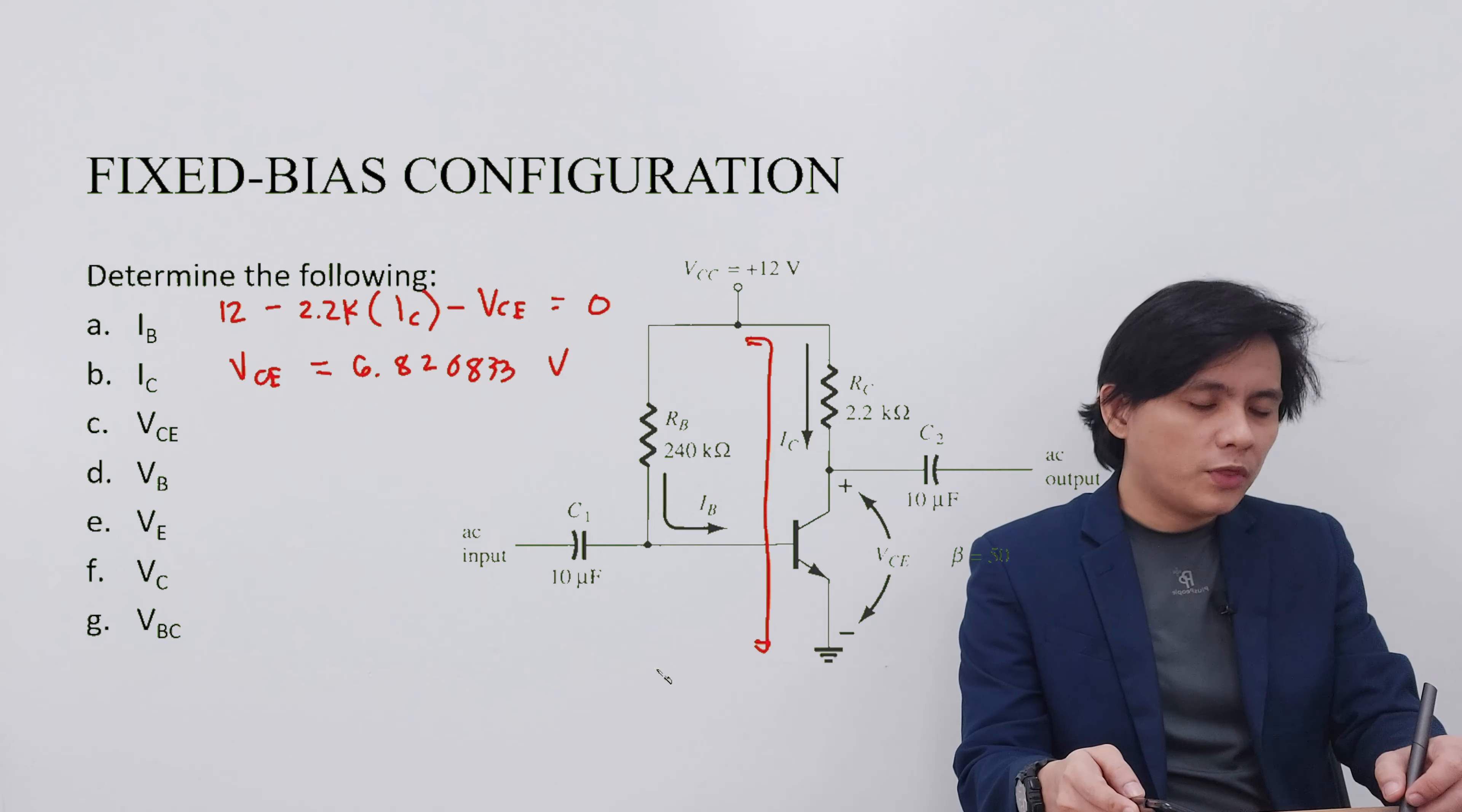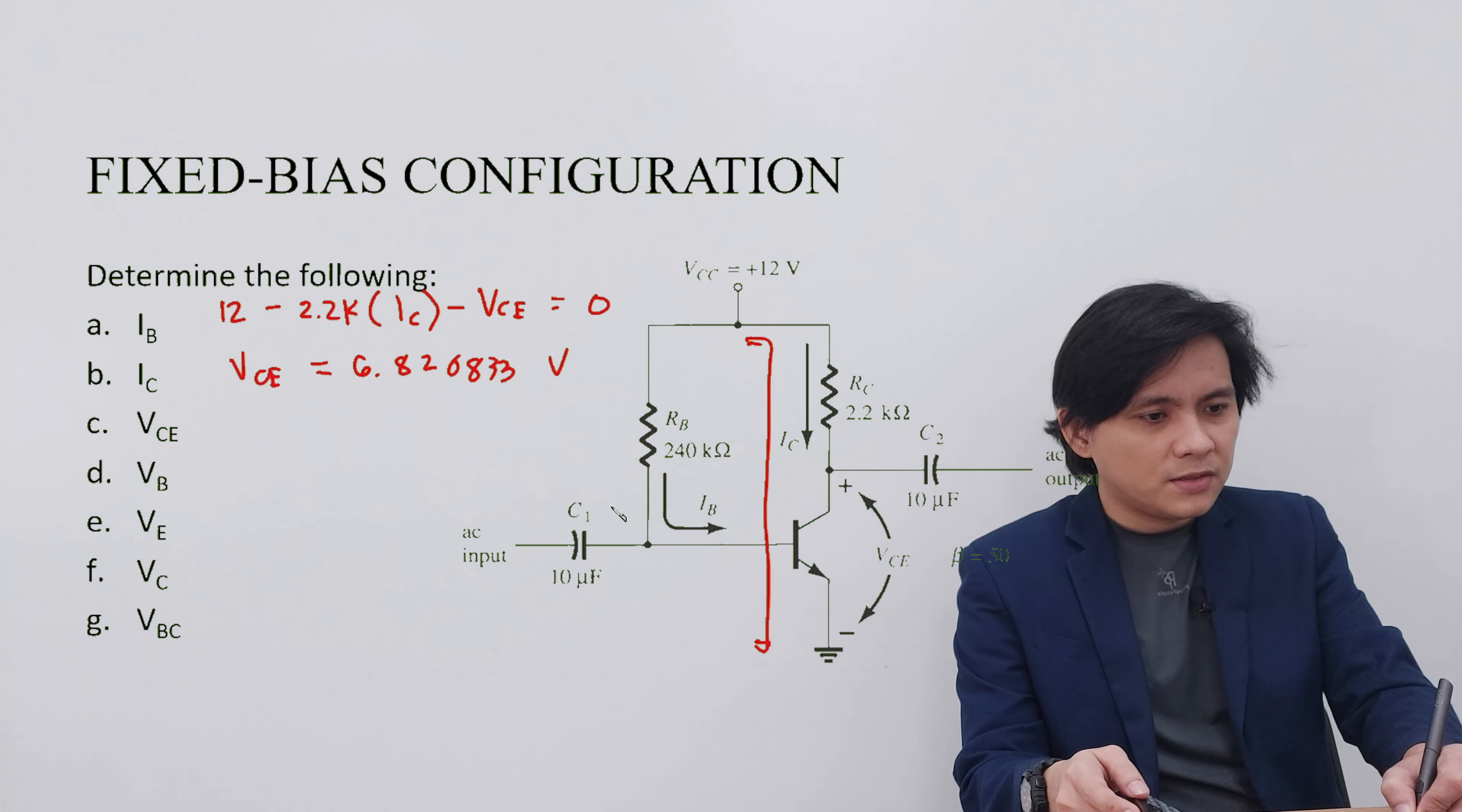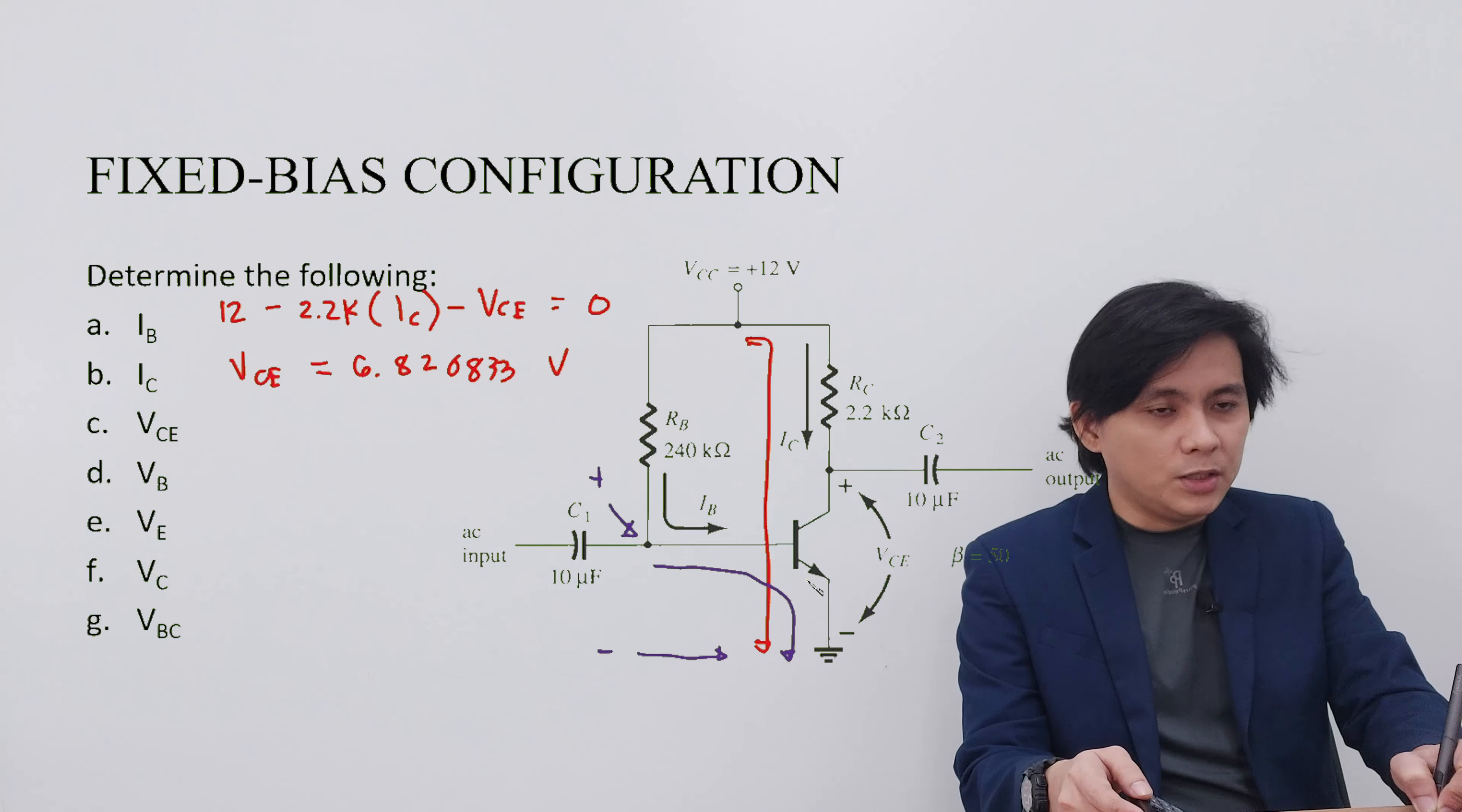The next thing that we have to solve is the VB. VB is the voltage drop when we try to measure from the base and our negative probe of our tester is on the ground. When we do a KVL starting from the base, all we can measure is the VBE in the BE junction.